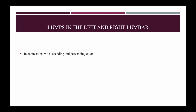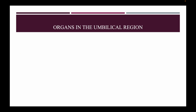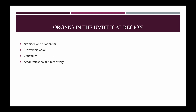Lumps in the left and right lumbar region are in connection with the ascending and descending colon, and swellings from neighboring structures such as liver, gallbladder, and spleen. Organs in the umbilical region: stomach and duodenum, transverse colon, omentum, small intestine and mesentery, lymph nodes, pancreas, aorta, and retroperitoneal connective tissue.